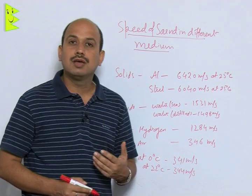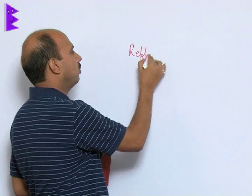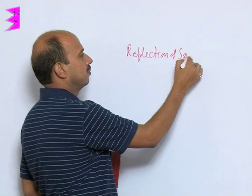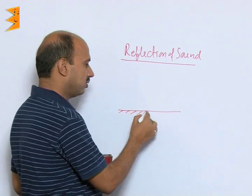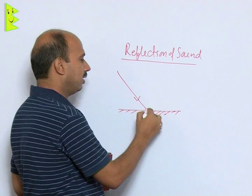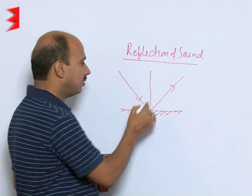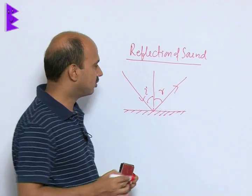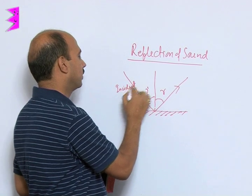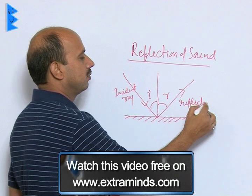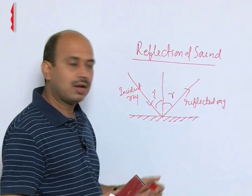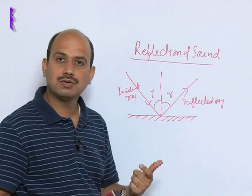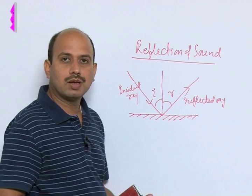We will now come to the next topic: reflection of sound. In reflection of sound, as we have done reflection of light, you take some surface — one ray comes and bounces to this side, there is a normal. This angle is the angle of incidence and this is the angle of reflection; this is the incident ray and this is the reflected ray. The same thing happens with sound — if sound is coming from one side, striking a point and getting reflected, this phenomenon is known as reflection of sound. Here also, angle of incidence is equal to angle of reflection.